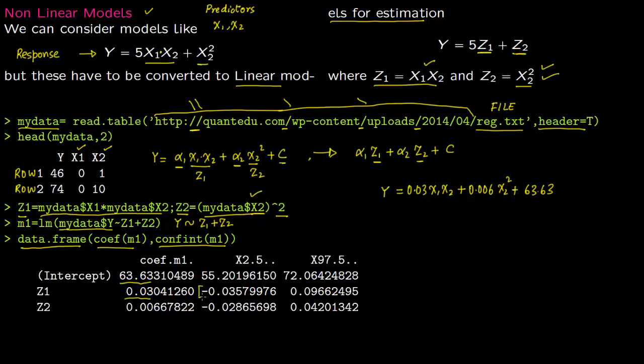But you can immediately see that this coefficient lies in this confidence interval. So 0.03 lies in this confidence interval, minus 0.035 to 0.09. Obviously 0 lies in this interval, so this is statistically equal to 0.